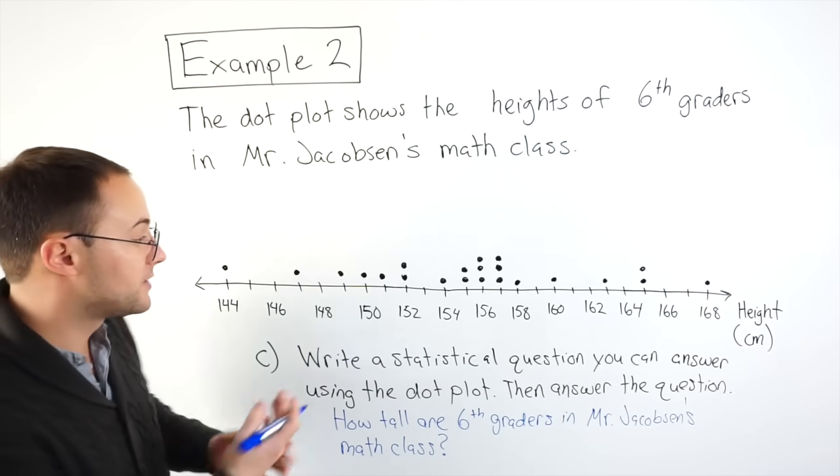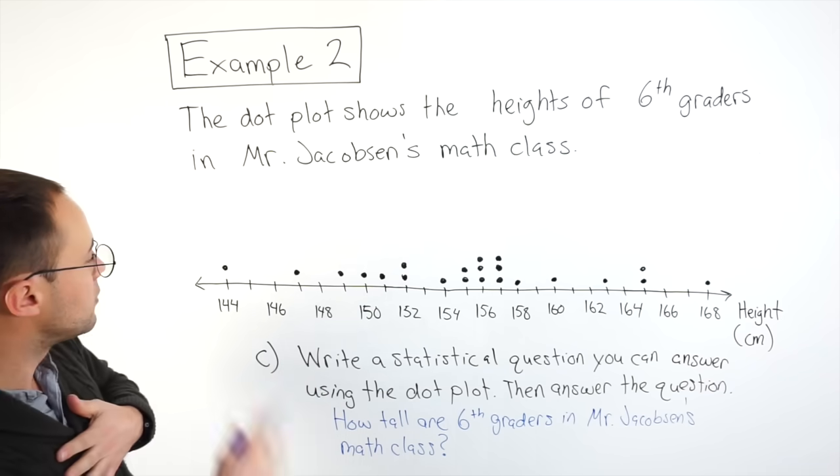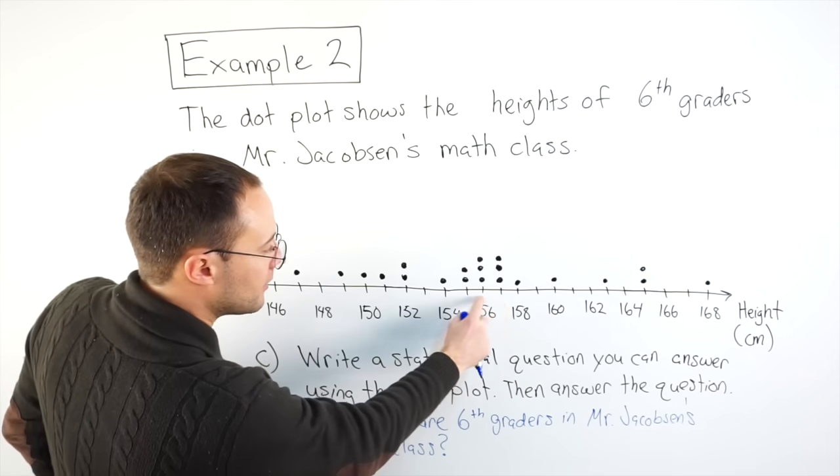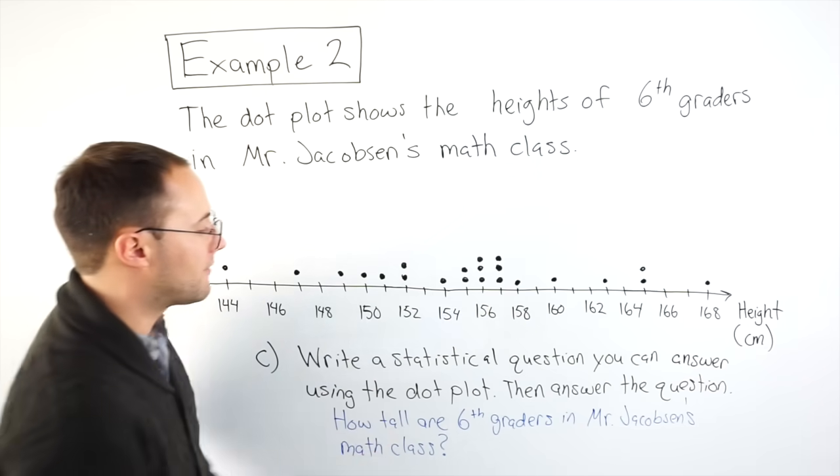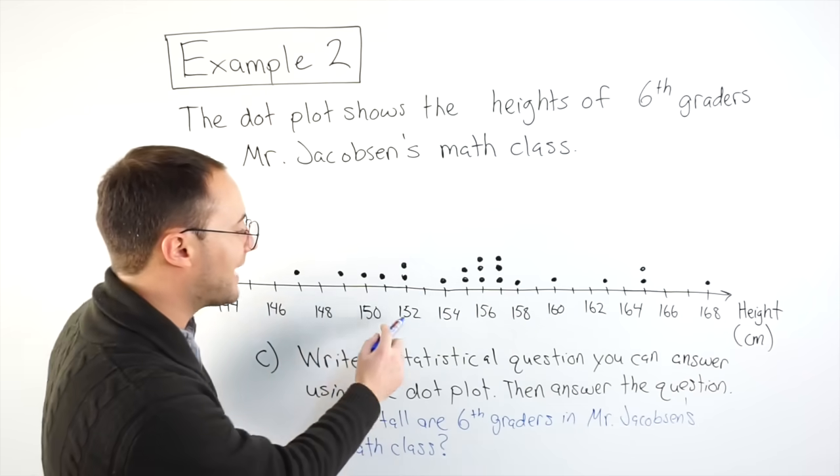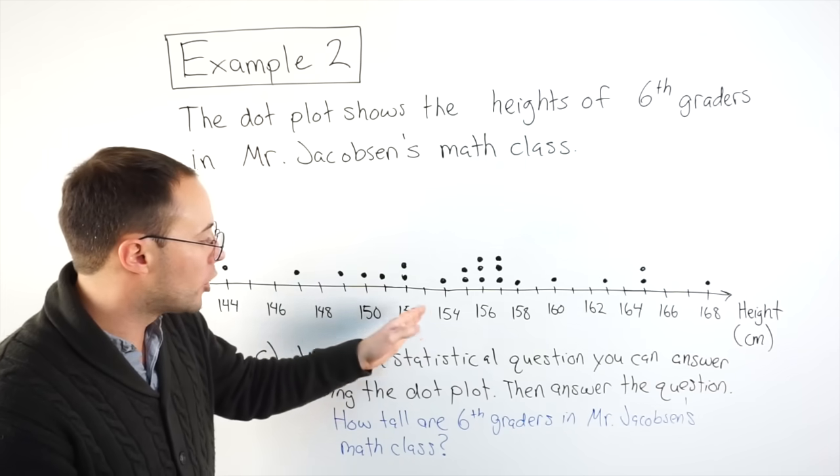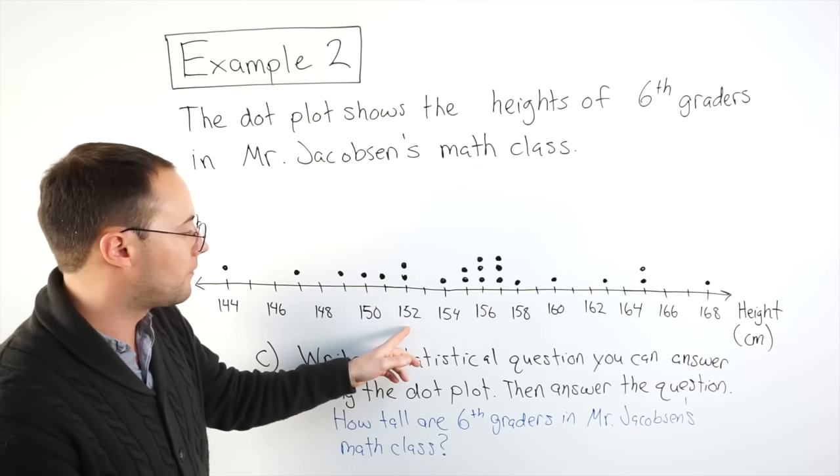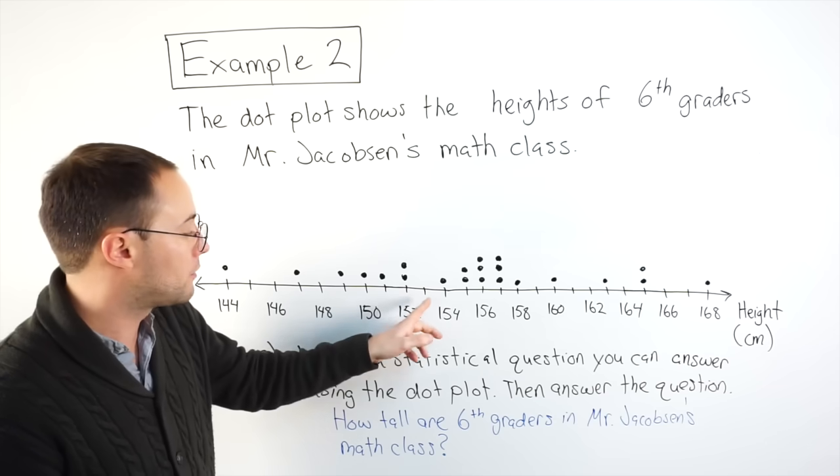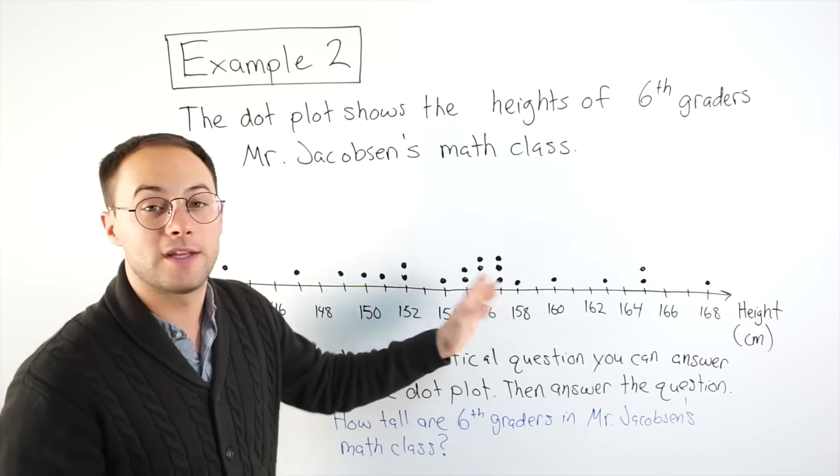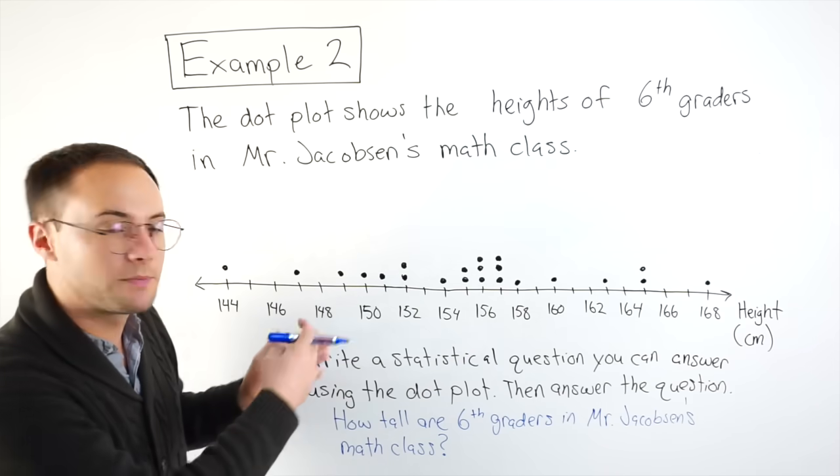Well, how tall are most 6th graders in my math class? If you look, we have two peaks right here. There's 56 and 57. By the way, you may have noticed I didn't label every single dash. But if you notice, I'm going by the same amount. So 152, that would be 153, 154, 55, 56, 157, 158. That's fine. You can do it that way. Just be consistent.